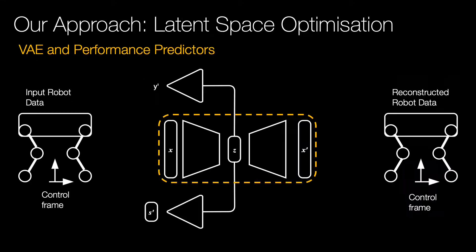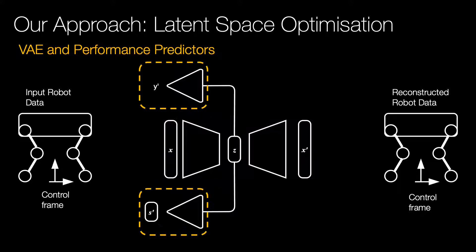In contrast to prior art, we use a deep generative model to learn a statistical representation of the quadruped's feasible joint space. More specifically, this is done with a variational autoencoder (VAE), and we then apply constraints using performance predictors. These are able to predict if a constraint is satisfied an order of magnitude faster than an analytical approach.